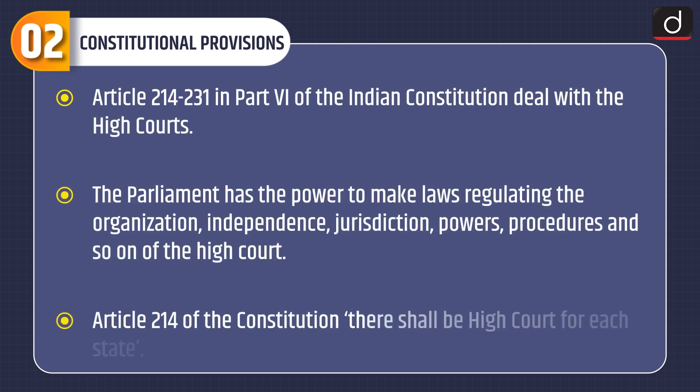Moving on to the constitutional provisions: Articles 214 to 231 in Part 6 of the Indian Constitution deal with the High Courts. The Parliament has the power to make laws regulating the organization, independence, jurisdiction, powers, procedures and so on of the High Court.